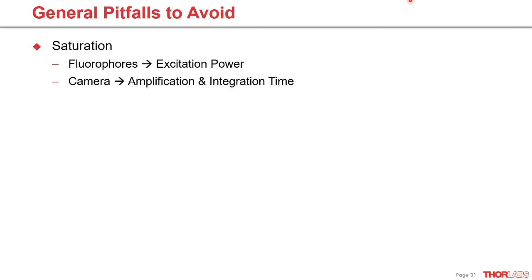Another part that can be saturated is your camera or detector. Look at the histogram of your camera to make sure there are no pixels beyond the highest collection capability of the camera chip. Make sure your camera gain is at an appropriate level to avoid saturated pixels. The integration time can also be shortened if you're already saturating.